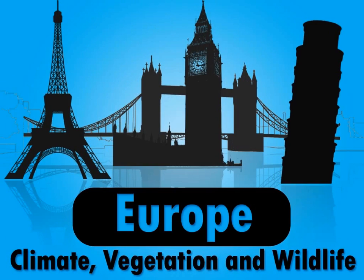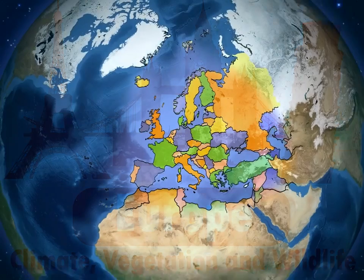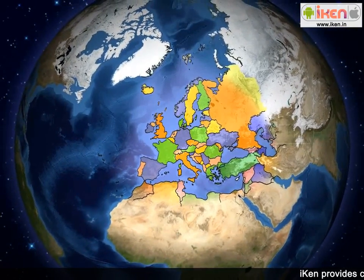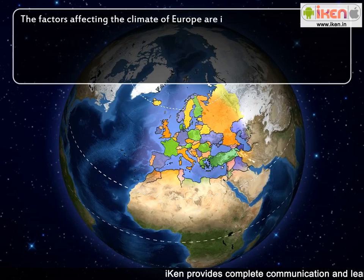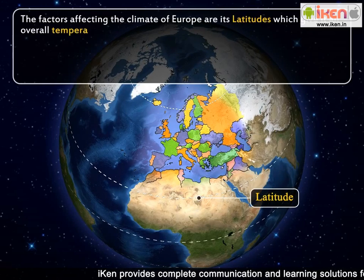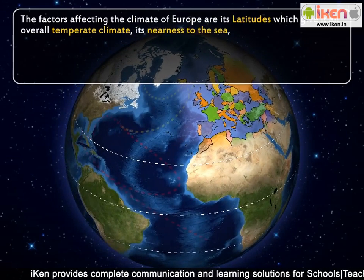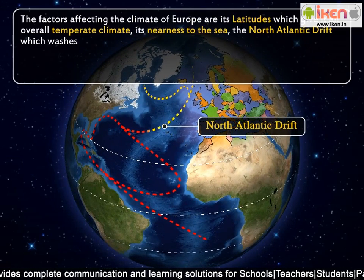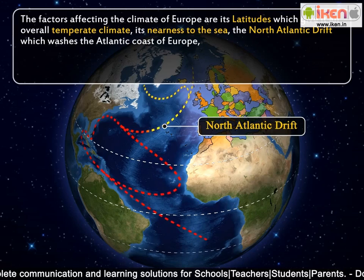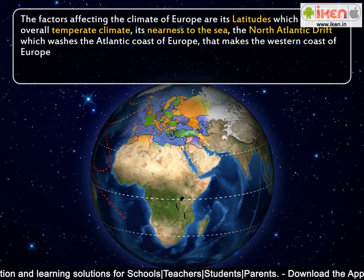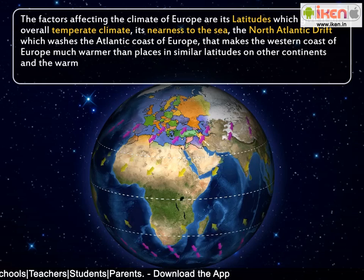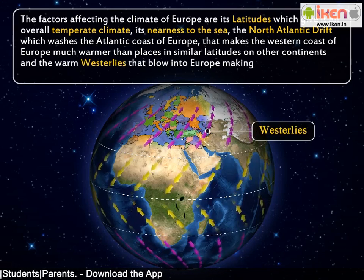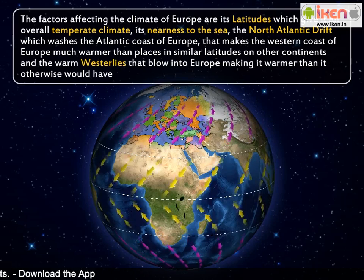Europe: Climate, vegetation and wildlife. One important feature of Europe is its pleasant climate. The factors affecting the climate of Europe are its latitudes, which give it an overall temperate climate, its nearness to the sea, the North Atlantic drift which washes the Atlantic coast of Europe making the western coast of Europe much warmer than places in similar latitudes on other continents, and the warm westerlies that blow into Europe making it warmer than it otherwise would have been.